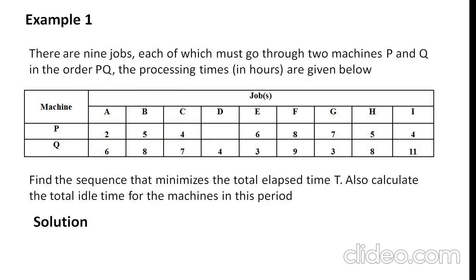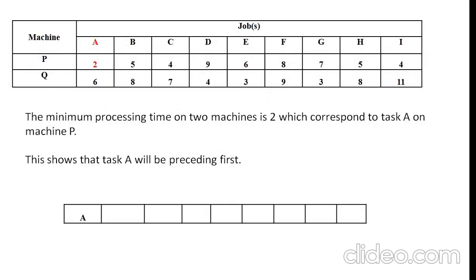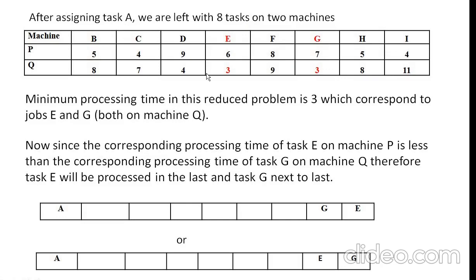Here we see a problem. The given problem has two machines and nine jobs. We have to find the total elapsed time for the given problem. From the given table, we have to find the minimum processing time. The minimum processing time is 2, which is selected from machine B corresponding to task A. So task A has to be performed first because the minimum time occurs in machine 1. Job A has to perform first in the new sequencing schedule. After assigning task A, we leave that column, and we have eight remaining tasks on two machines.